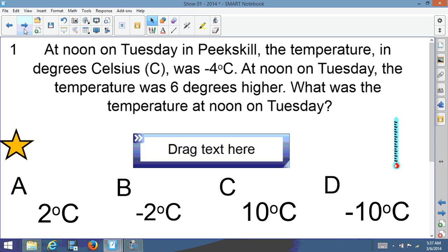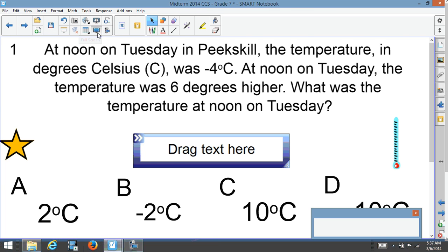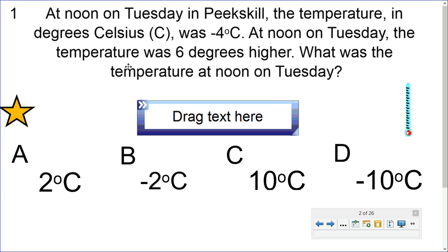First question: at noon on Tuesday in Peekskill, the temperature in degrees Celsius was negative 4. At noon on Wednesday, the temperature was 6 degrees higher. What was the temperature at noon on Wednesday? So we have a problem that starts us off with a temperature of negative 4 degrees Celsius — and that's very cold.